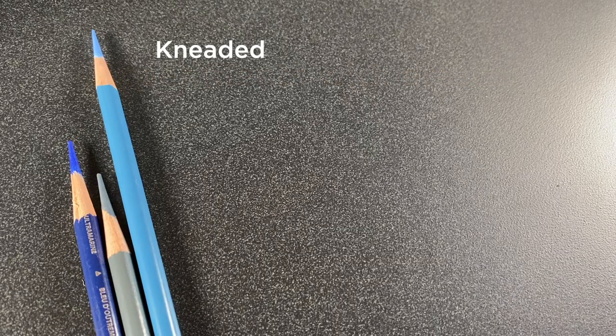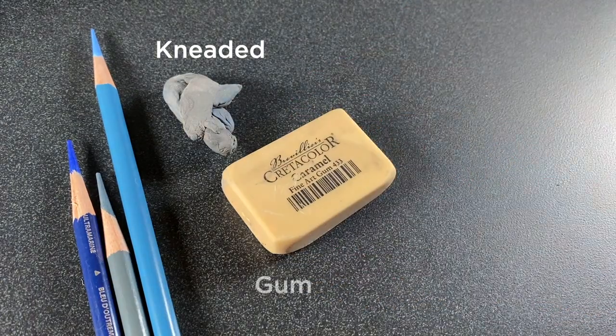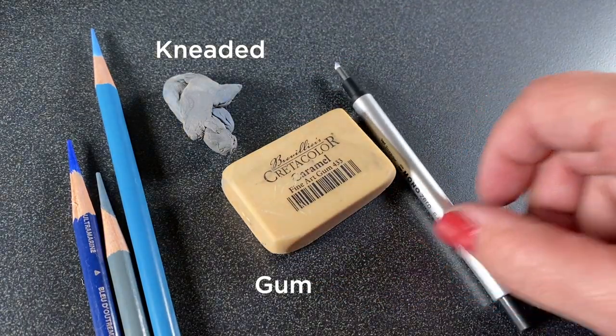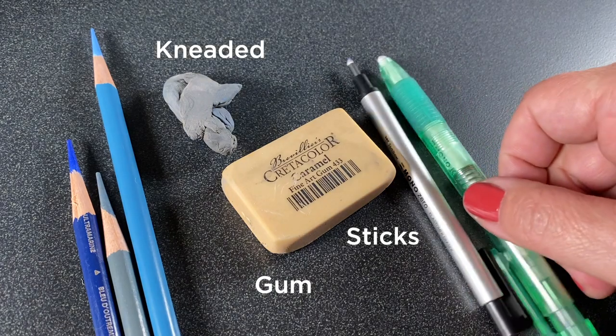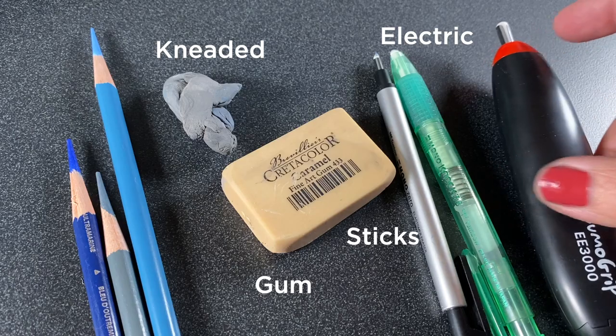As much as I love Stonehenge paper, when I started playing with these erasers, I found something that another paper does better. I'm using a kneaded eraser, a gum eraser, a stick eraser, and an electric eraser and I'll talk about each one as we go. But first we're going to do the Stonehenge experiments.